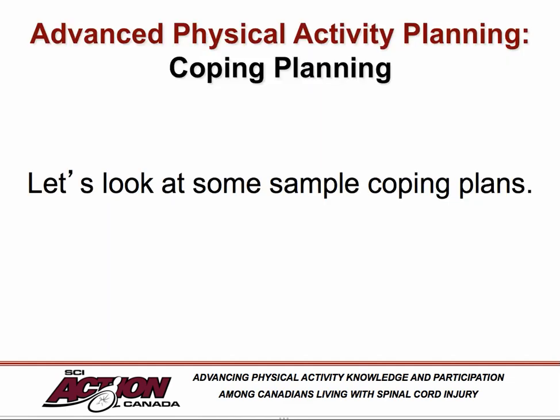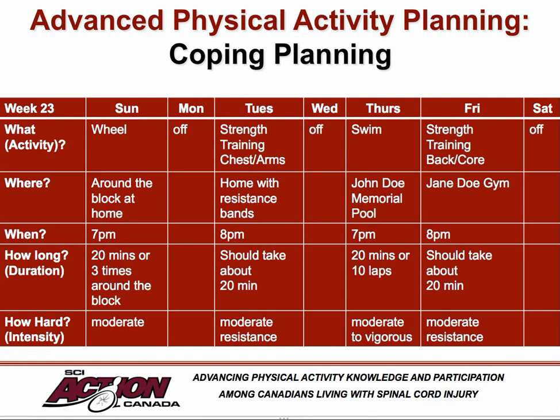Let's take a look at some sample coping plans. Recall the sample action plans from the previous section. On Sunday, the individual planned to wheel around the block at 7pm for about 20 minutes at a moderate intensity. Monday was a rest day. Tuesday, they planned strength training focusing on chest and arms at home using resistance bands at 8pm for about 20 minutes at moderate resistance. Wednesday was another rest day. Thursday, the individual planned to go swimming at the local pool at 7pm for about 20 minutes at moderate to vigorous intensity. Friday involved a second strength training session focusing on the back and core at the local gym at 8pm for about 20 minutes at moderate resistance. Saturday was a rest day.